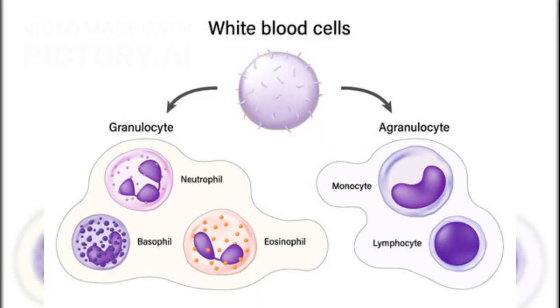Granulocytes are the most common type of white blood cell. They contain small granules that release enzymes to fight infection and inflammation. Granulocytes include neutrophils, eosinophils, and basophils.